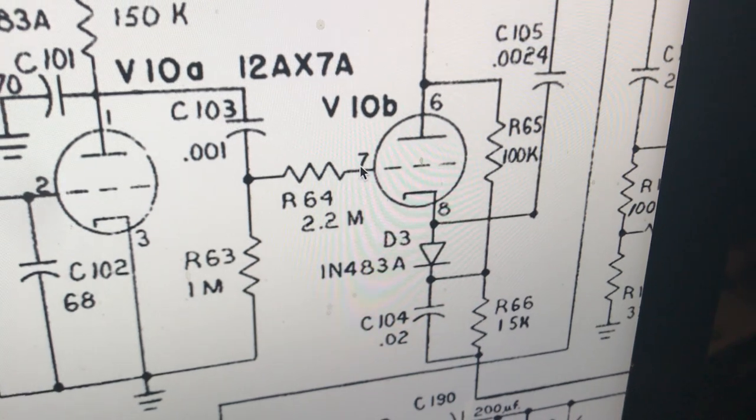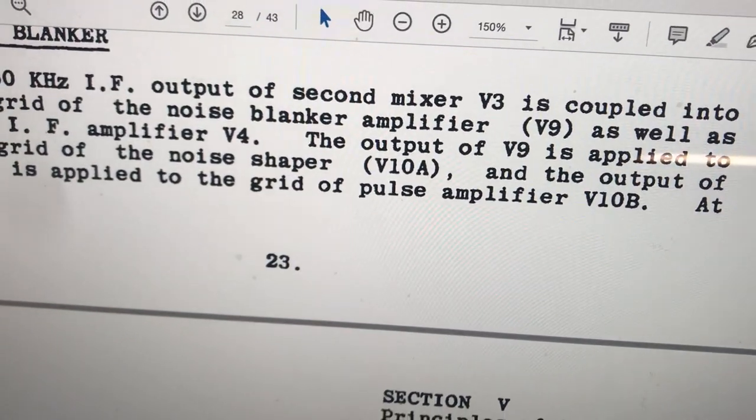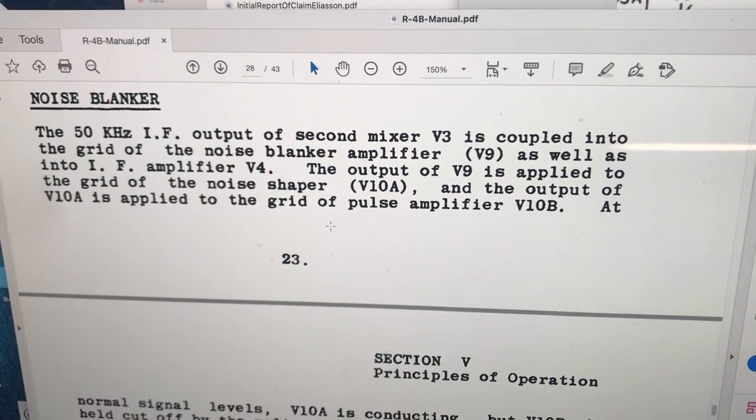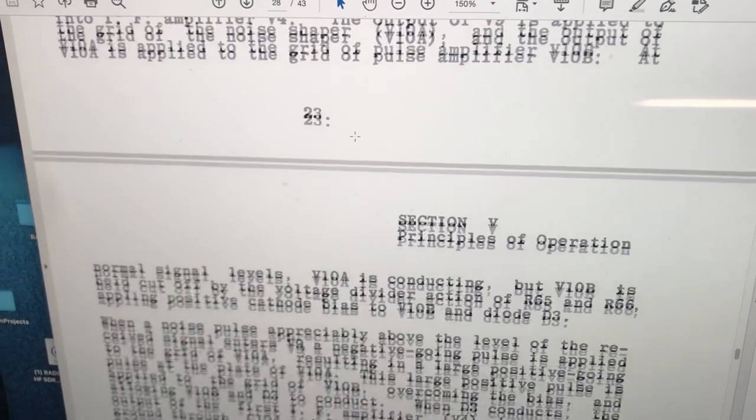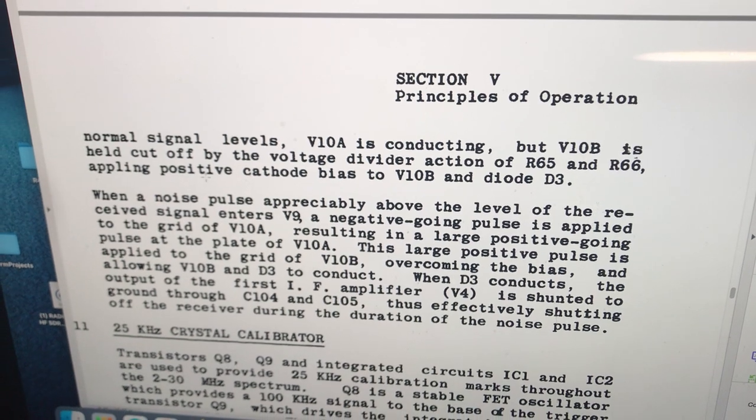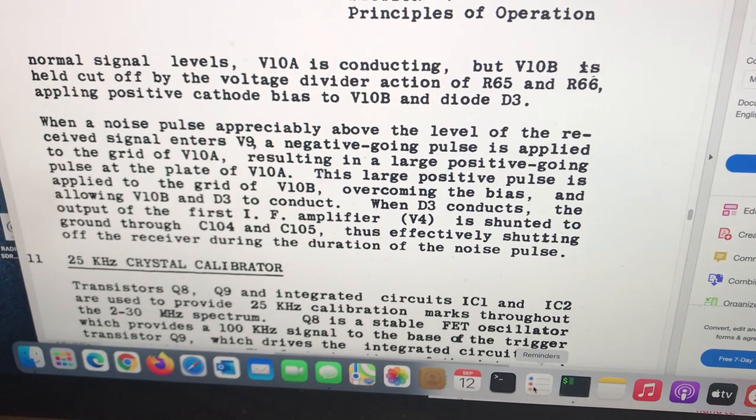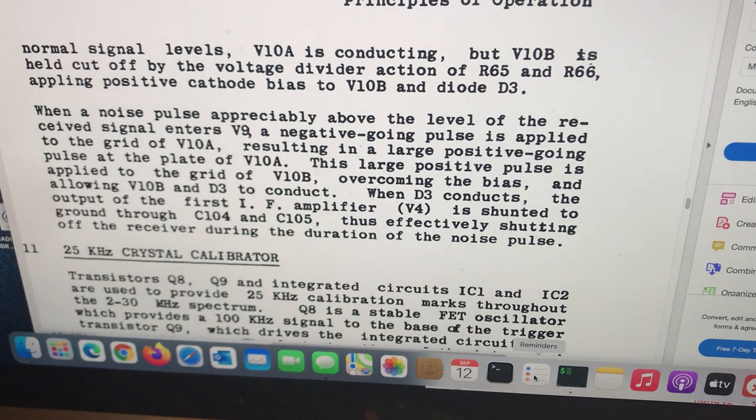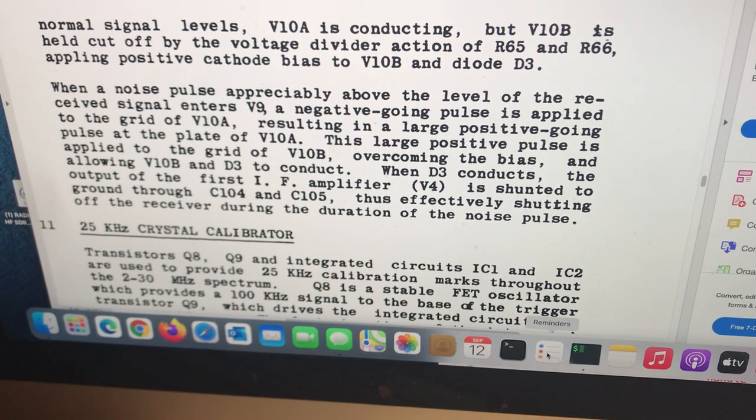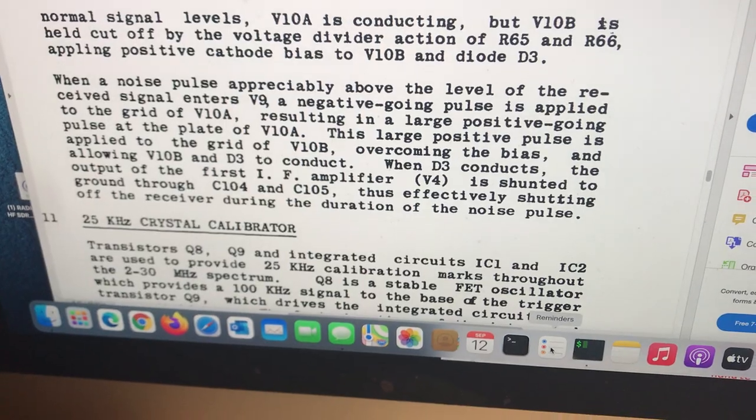Let's now take a look at the diode, which is pin 8 on V10B. V10A is conducting and V10B is held off. When the noise pulse is above level, the negative-going pulse applied to the grid of 10A, we saw that large positive-going pulse at the plate of 10A. A large positive pulse is applied to the grid of V10B, which should make the grid conduct. That overcomes some bias and allows V10B to conduct.